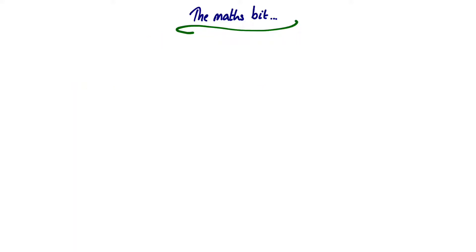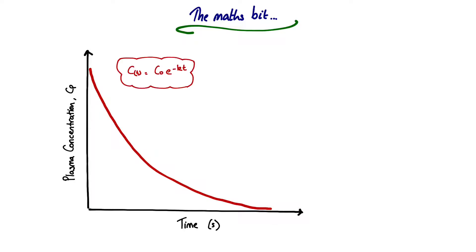The basis of all the maths around first-order kinetics stems from the graph of plasma concentration plotted against time. This is a negative exponential function defined by this equation. Plasma concentration as a function of time equals C₀, which is our starting concentration, the plasma concentration value at this point here.